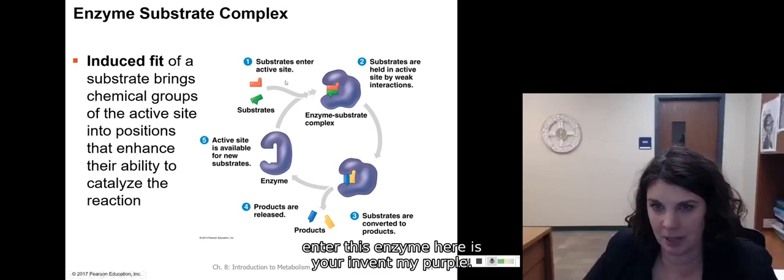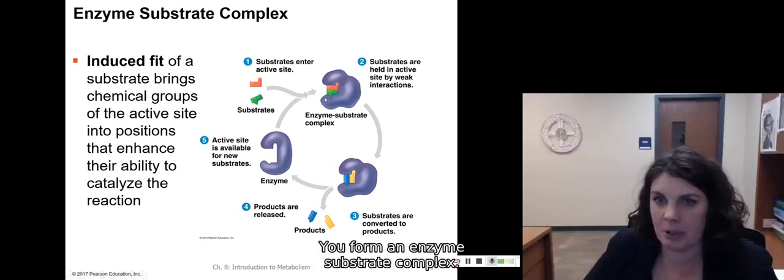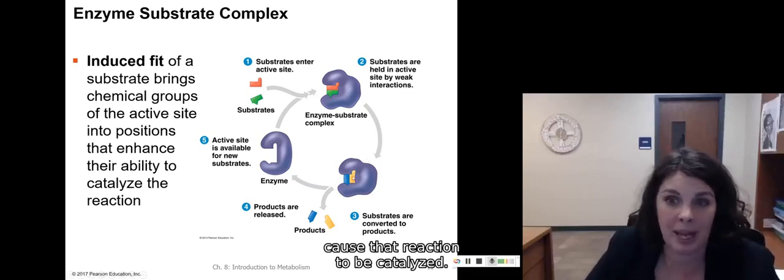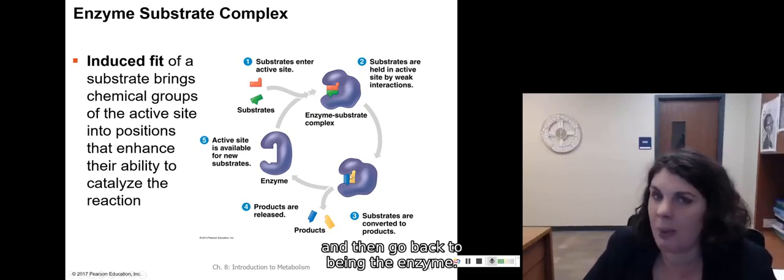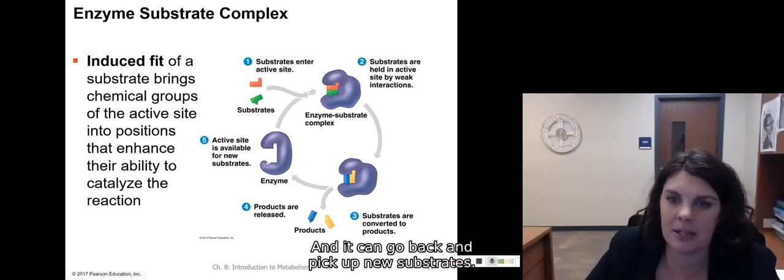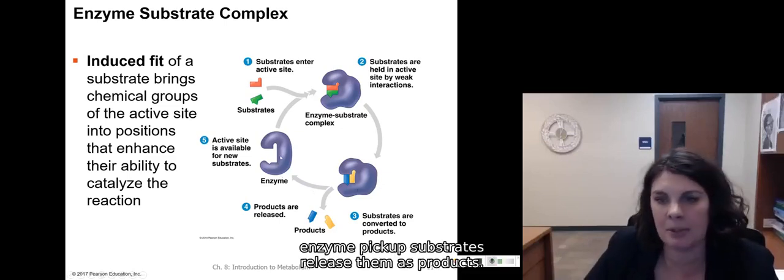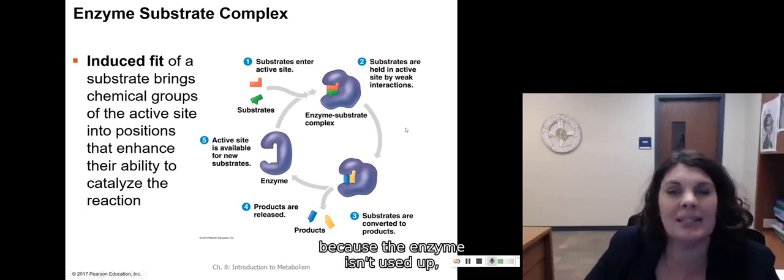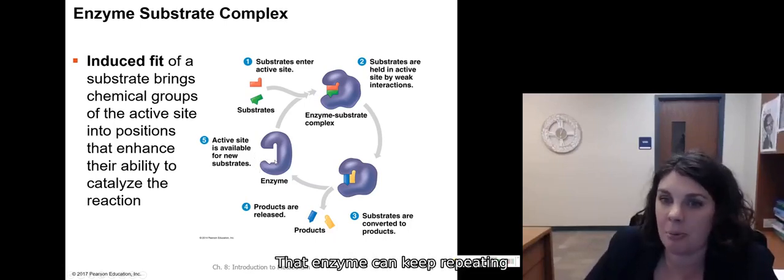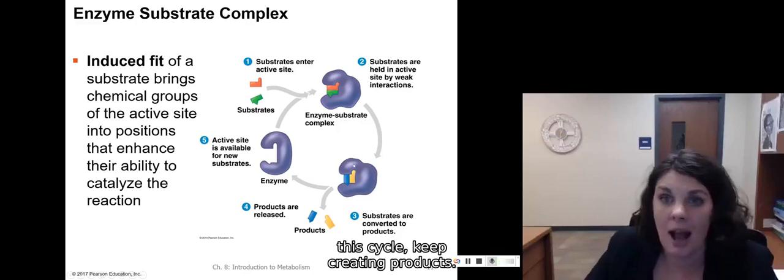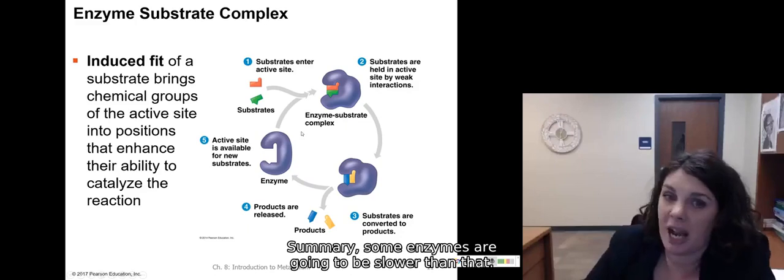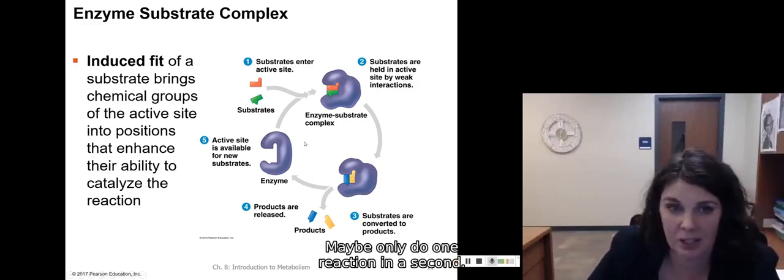Induced fit also allows the chemical groups on the active site to move into positions that enhances the reaction occurring. So here you have two substrates, enter this enzyme, here's your enzyme in purple, and you form an enzyme substrate complex. That enzyme is going to have induced fit holding them together and cause that reaction to be catalyzed. It's going to speed up the reaction, release the products, and then go back to being the enzyme. The enzyme alone is exactly how it started the reaction. And it can go back and pick up new substrates, turn them into products, go back to being a plain enzyme, pick up substrates, release them as products. It can go back again and again and again because the enzyme isn't used up. The enzyme isn't changed or destroyed or altered in any way. That enzyme can keep repeating the cycle, keep creating products at like a thousand times a second. Some enzymes even work faster than that, can do more than a thousand reactions in a second. Some enzymes are going to be slower than that, maybe only do one reaction in a second.